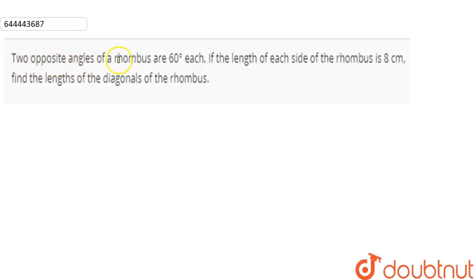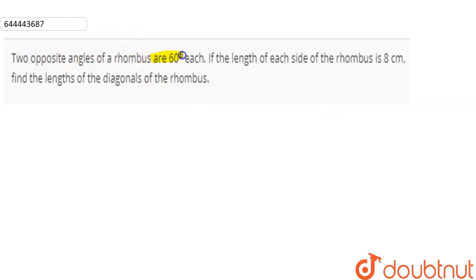Two opposite angles of a rhombus are 60 degrees each. If the length of each side of the rhombus is 8 cm, then find the length of the diagonals of the rhombus. Two opposite angles of a rhombus are 60 degrees each and length of each side of the rhombus is 8 cm. We have to find the length of the two diagonals.